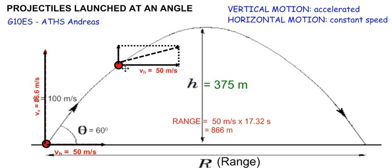The horizontal velocity will always remain constant. By utilizing information about the vertical and horizontal velocity components, we can find the resultant velocity of the ball and its direction of travel at any instant. We can use Pythagoras and trigonometry to do this.